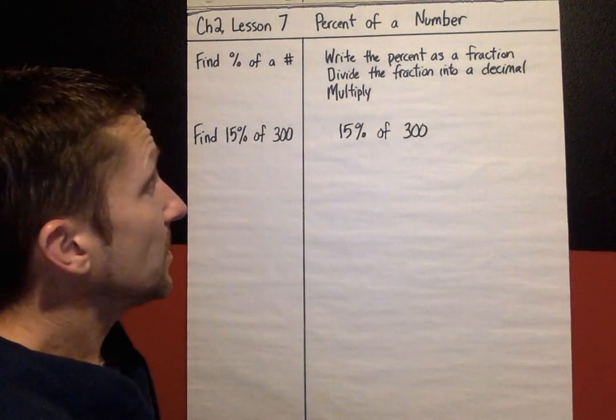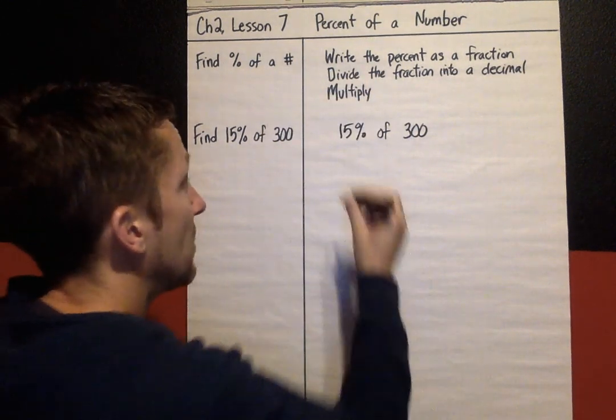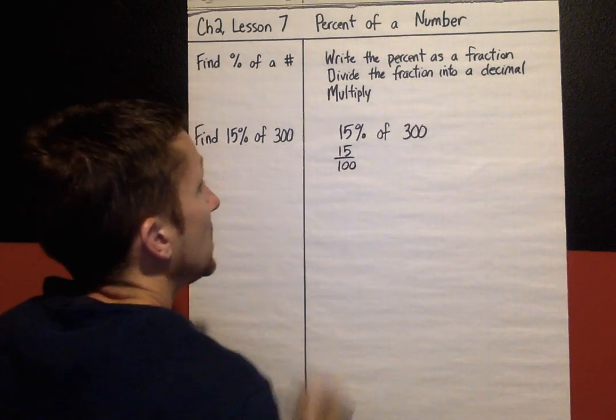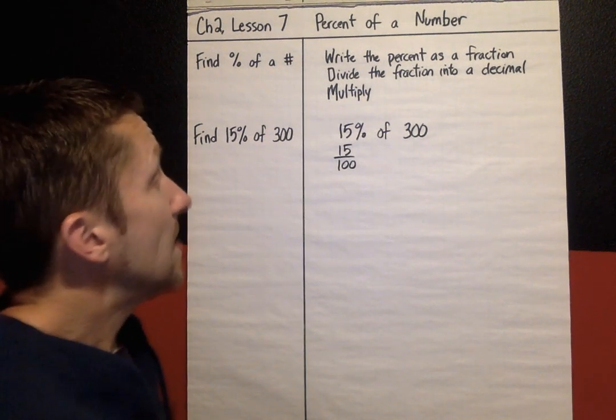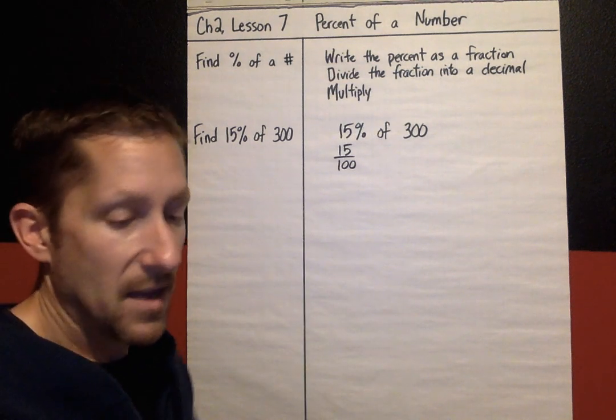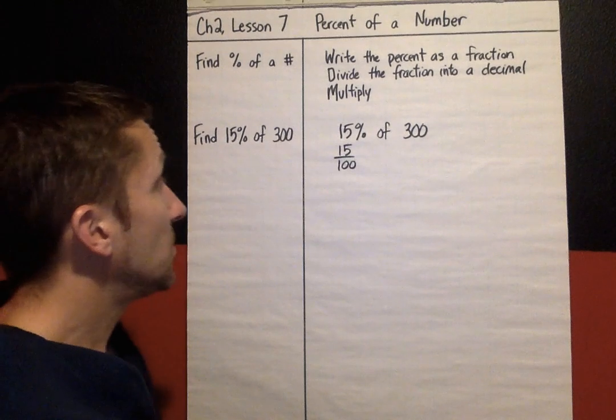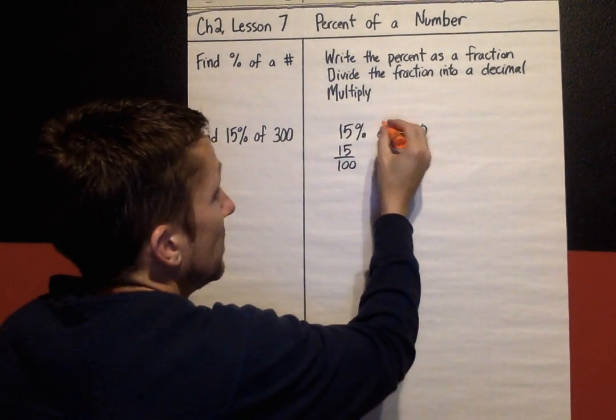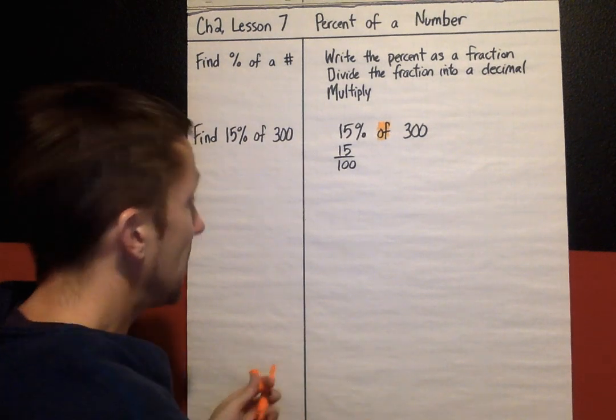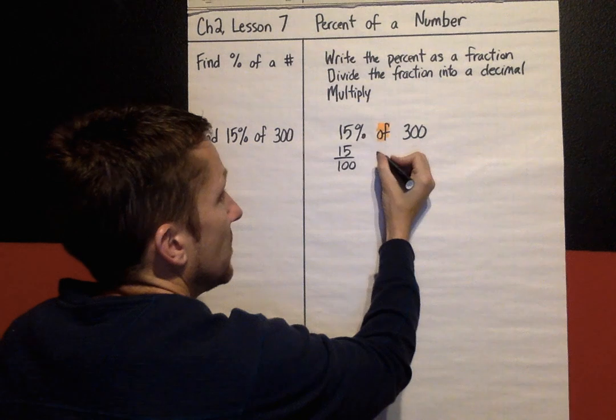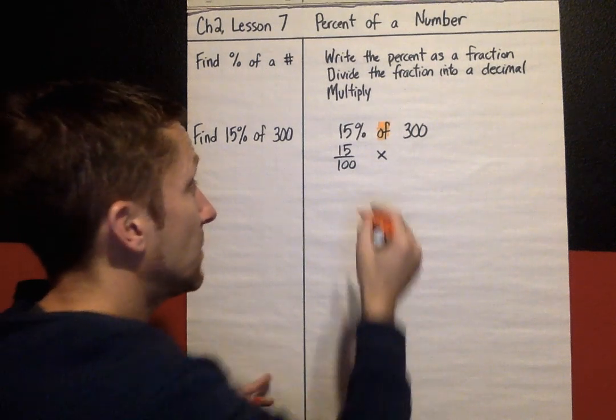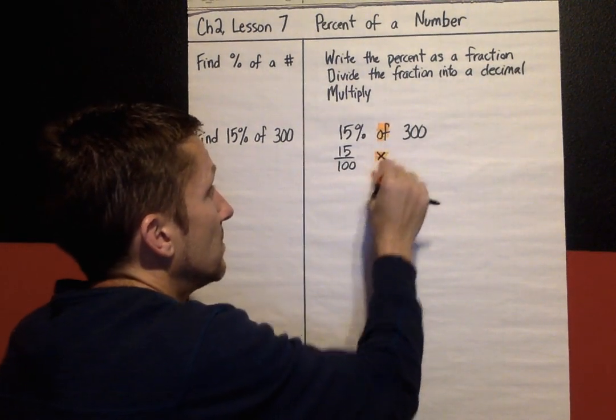Step one, write the percent as a fraction. I know that percent means out of a hundred. So I'm going to change this 15% and rewrite it as 15 out of a hundred. Now, when you see the word of in mathematics, something of something else, this always translates into multiplying. So something of something else, instead of that word of, I'm translating it into multiply.